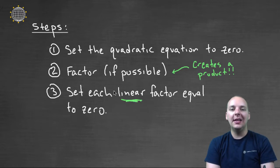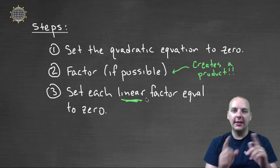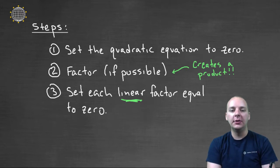But both of those individual factors are linear. So what we can do next is set each of those individual guys equal to zero, which we can solve quite easily, and there would be our solutions to the quadratic equation. So set it equal to zero, factor it, and then set each individual factor equal to zero.